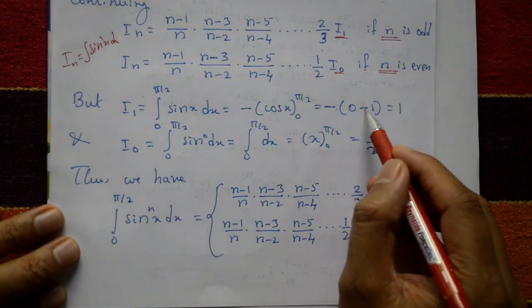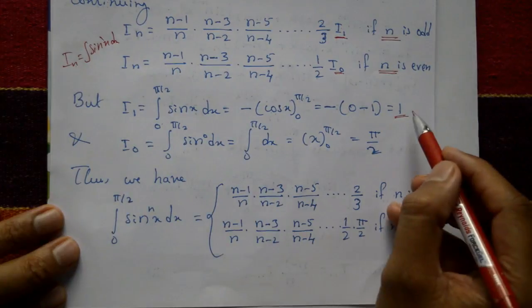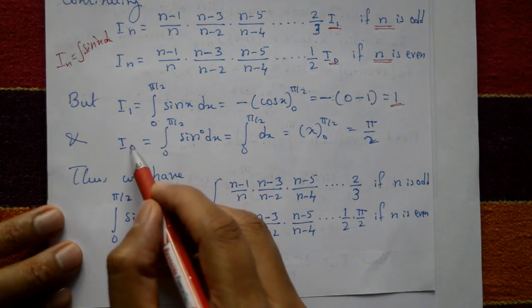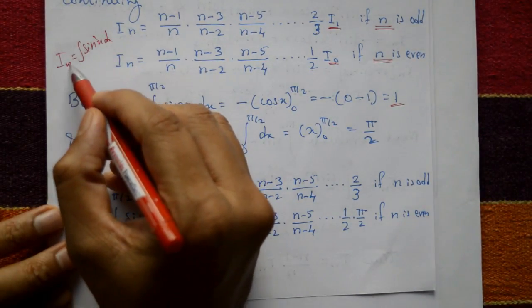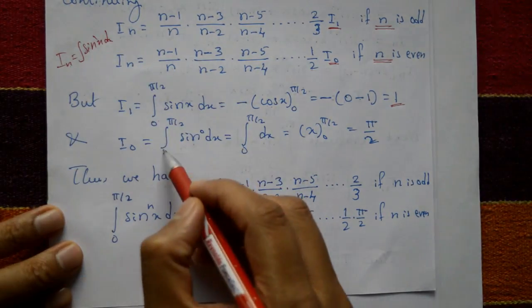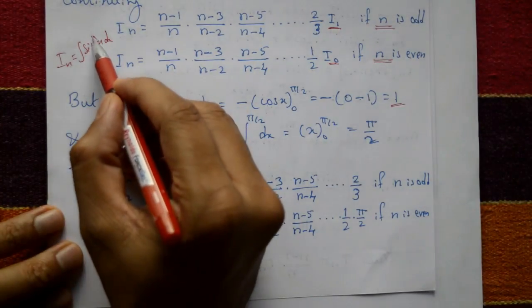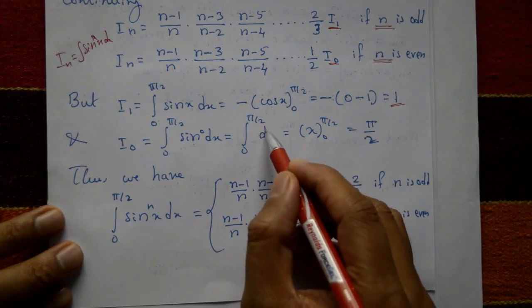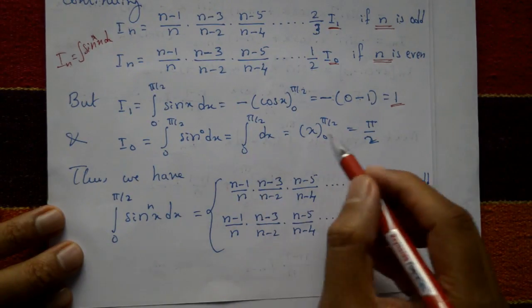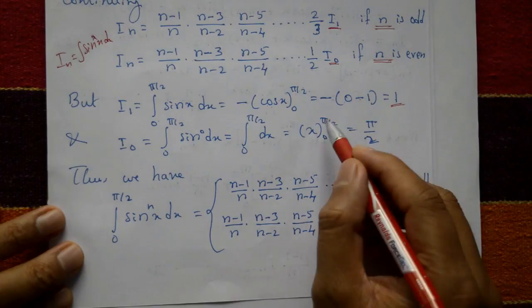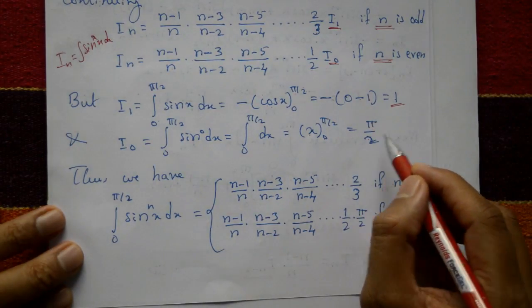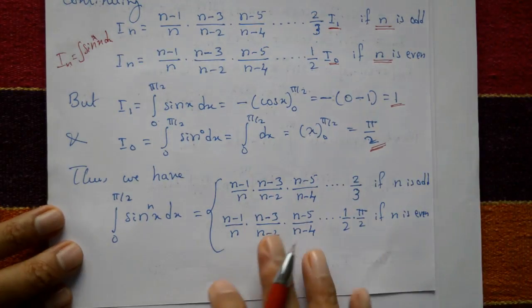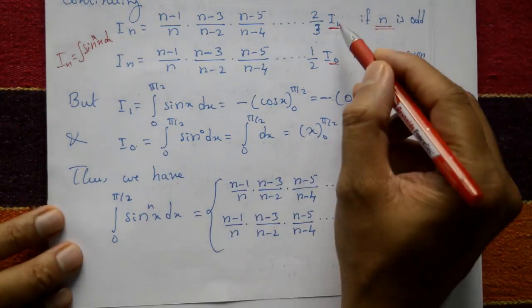For I₀: put n = 0, so I₀ = ∫₀^(π/2) sin⁰x dx = ∫₀^(π/2) 1 dx = [x]₀^(π/2) = π/2. So I₁ = 1 when n is odd, and I₀ = π/2 when n is even.